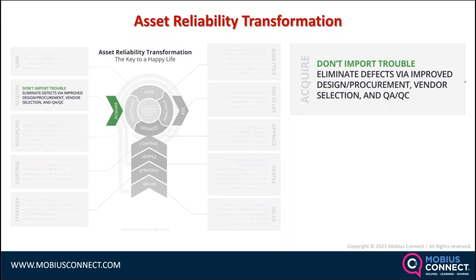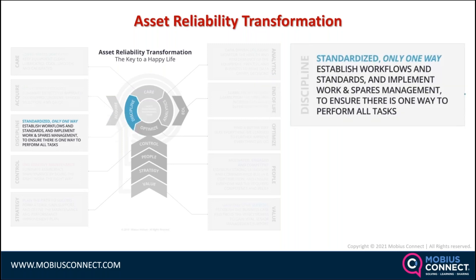Aligned with that is the discipline phase — the attitude of standardization. Everything we do with maintenance and the way we operate equipment needs to be standardized. There should be only one way to do things. This idea that one person installs a bearing differently from another, or aligns a machine differently, with no procedures, standards, or tolerances — that has to end. The only way to set the machine up for success is to standardize workflows and procedures, proper work management, planning and scheduling, and spares and materials management.